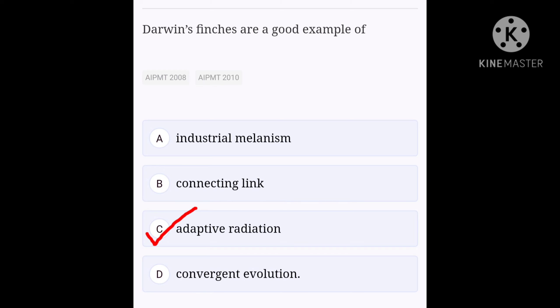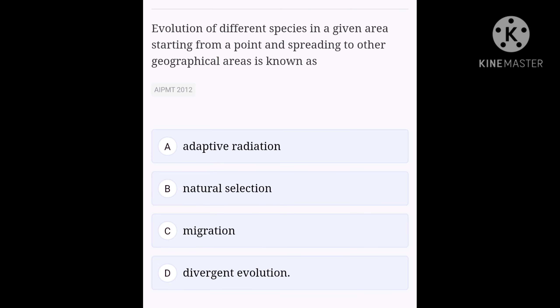Next question. Evolution of different species in a given area starting from a point and spreading to other geographical areas is known as option A: adaptive radiation, option B: natural selection, option C: migration, option D: divergent evolution.